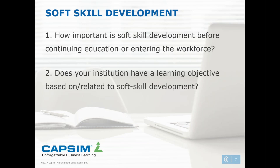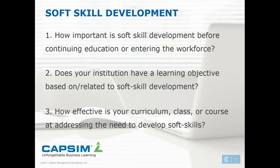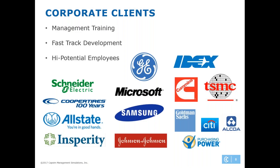The second question: does your institution have a learning objective that's either based on or related to soft skill development? Higher education institutions are very much starting to change this, updating their learning objectives to include soft skills, and on the high school and CTE side we're starting to see many changes there as well. The final question: how effective is your curriculum or course at addressing the need to develop soft skills in your students?